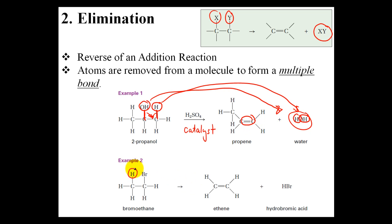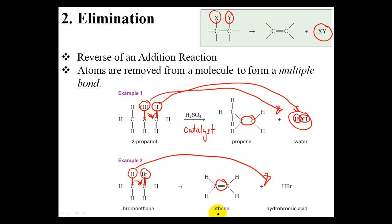Similarly, the hydrogen and the bromine are removed or eliminated to form hydrogen bromide, or hydrobromic acid, and the single bonds that are left over collapse down to form a double bond. So don't worry too much about what type of catalyst is being used right now. For now, I just want you to get comfortable with the overall patterns for elimination and addition reactions.